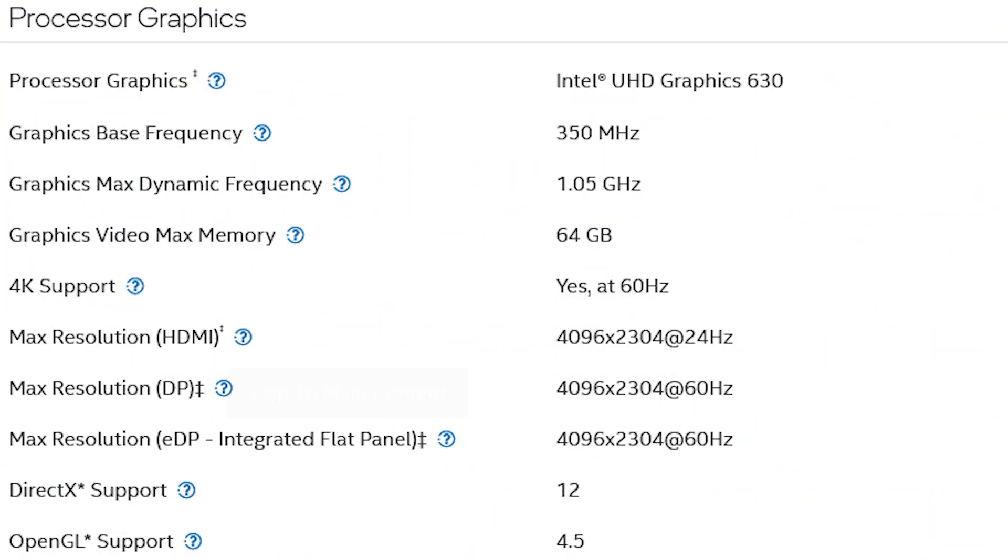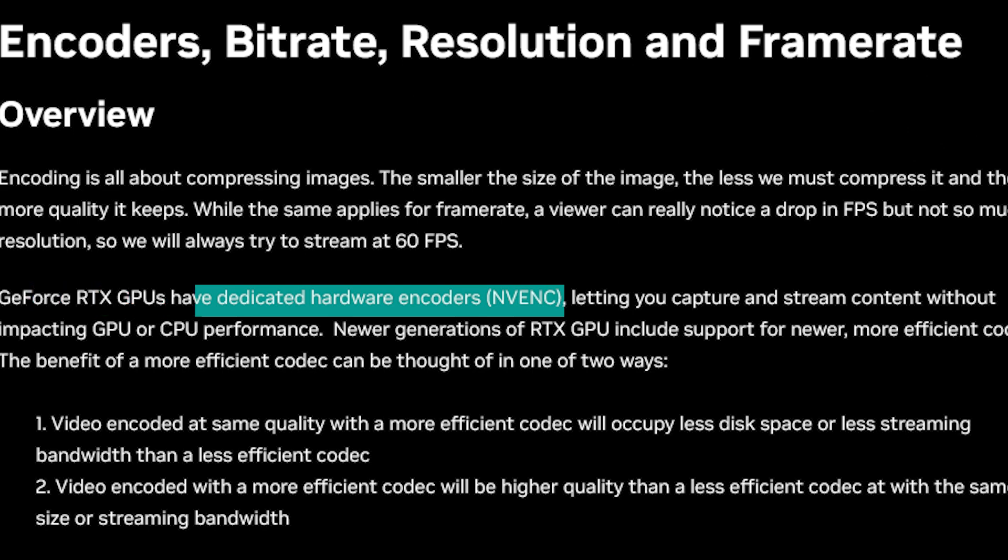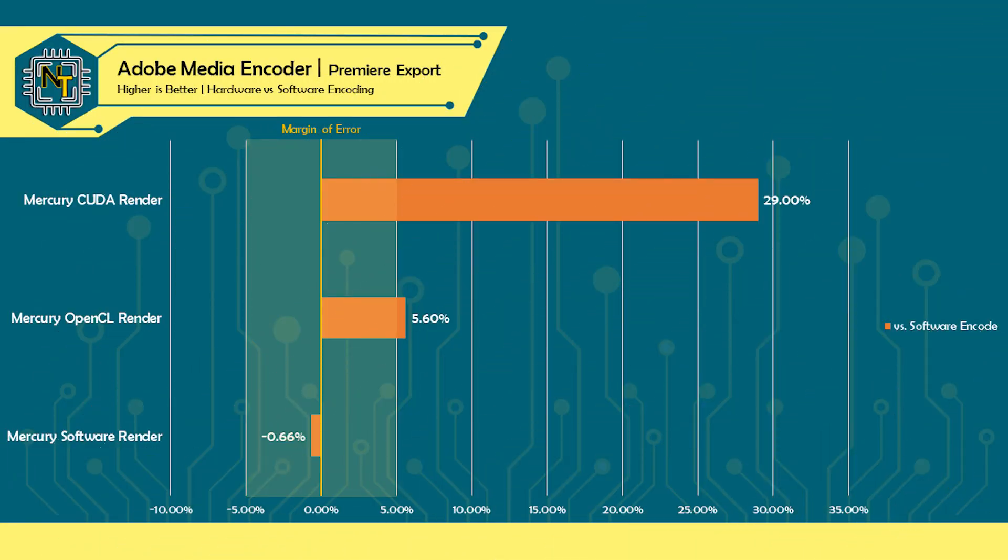But what about the hardware accelerated encoding — which GPU utilizes that? Here the question is more straightforward: it's the Intel iGPU, because it's the only one with a dedicated video encoder and decoder: QuickSync. NVIDIA does have their own, NVENC, but it's not on the GT 1030. So all hardware accelerated encoding is done on the iGPU using QuickSync. That still leaves several questions — why are the performance deltas between software and hardware encoding so different between the renderers? We range anywhere between a 30% increase in export speeds to no increase whatsoever. After wrapping my brain around this, what I think is happening is that the renderer is bottlenecking the encoder in all tests except CUDA.